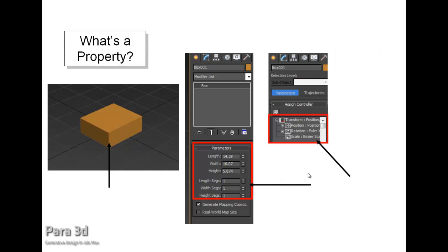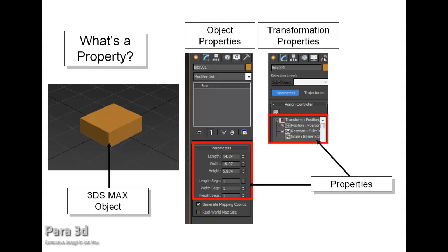Let's give an example. Consider a very simple object in 3ds Max, which can be a box. A box has different kinds of properties. Mainly, properties are grouped in two different categories. The first category is transformation properties, which contains the position, rotation, and scale of the object. Using these properties you can move, rotate, and scale an object.